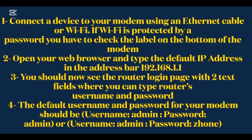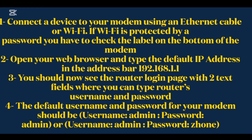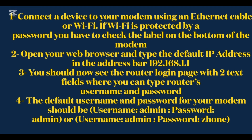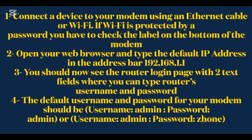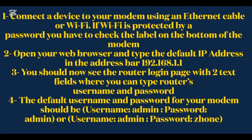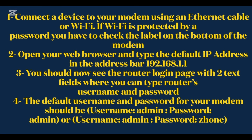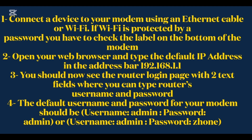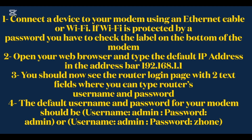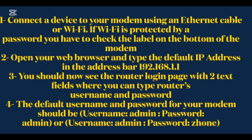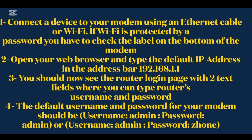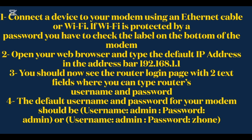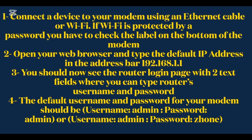Connect a device to your modem using an Ethernet cable or Wi-Fi. If Wi-Fi is protected by a password, you have to check the label on the bottom of the modem. Open your web browser and type the default IP address in the address bar: 192.168.1.113.